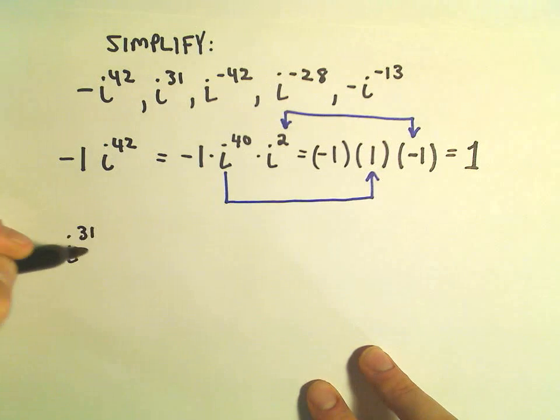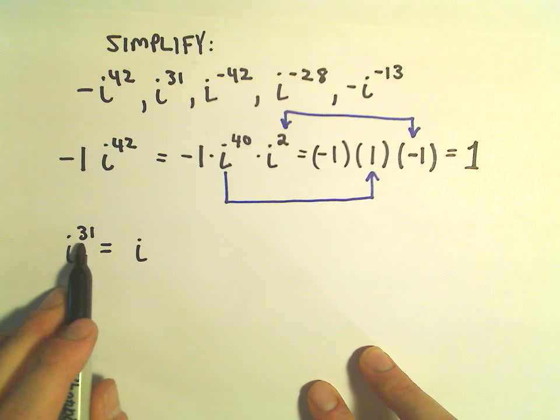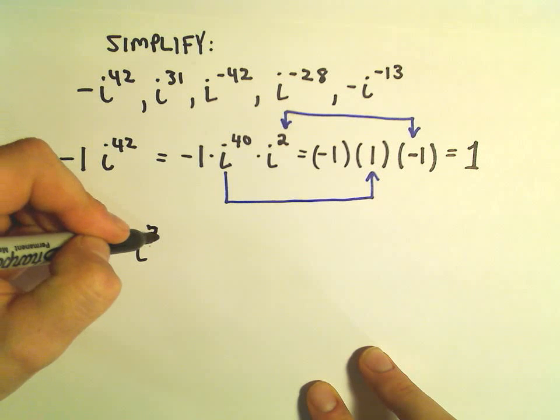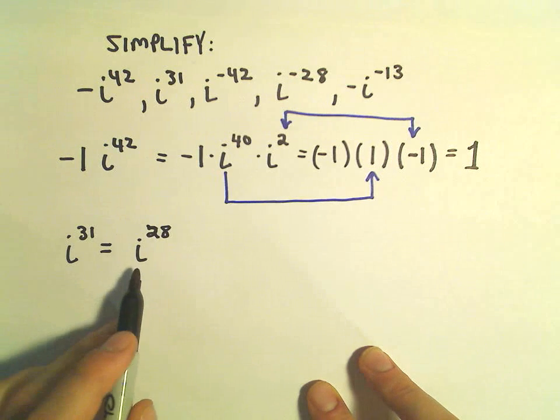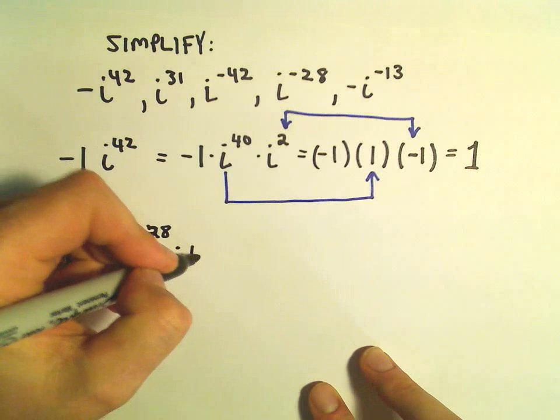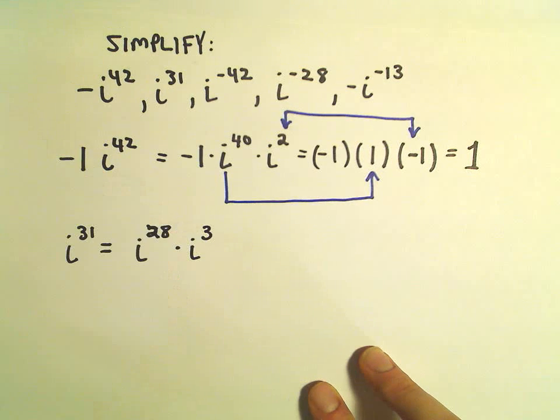Okay, so i to the 31st. I'm just going to do the same trick. Does 4 go into 31 evenly? And I say well no, but I think it would go into it seven times, which means we could use i to the 28th power.